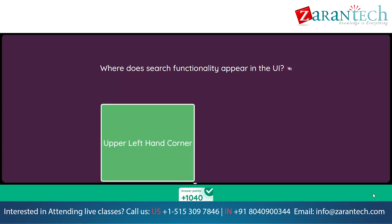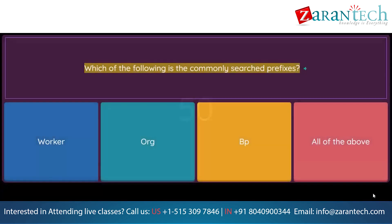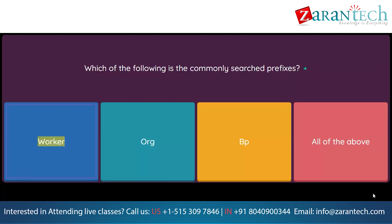Which of the following is the commonly searched prefixes? Option 1: Worker. Option 2: Org. Option 3: BP. Option 4: All of the above.